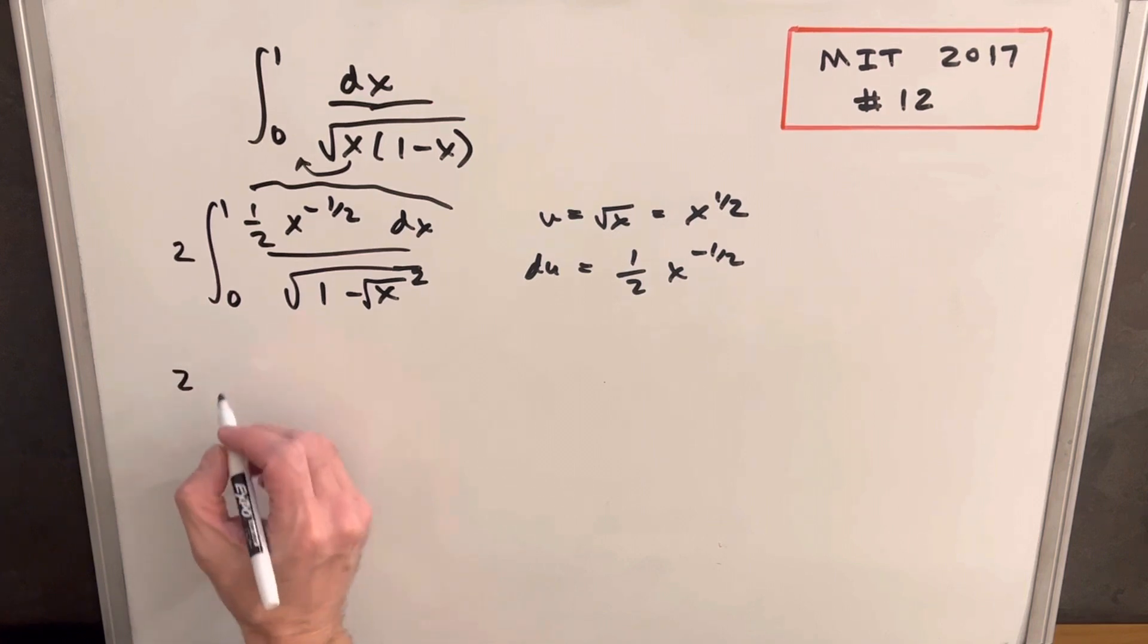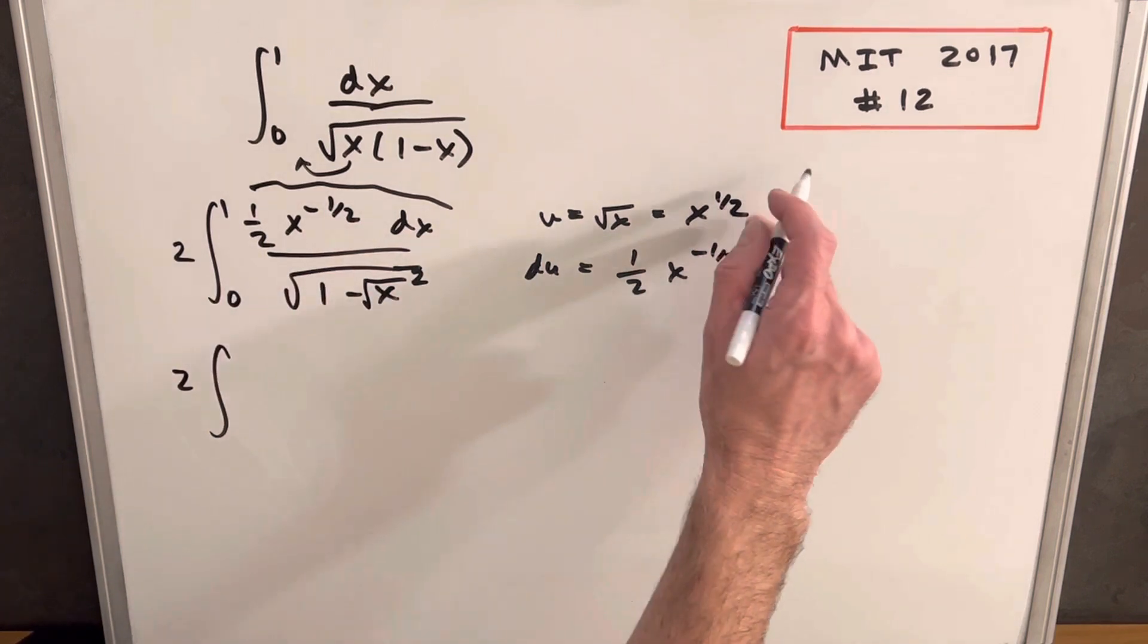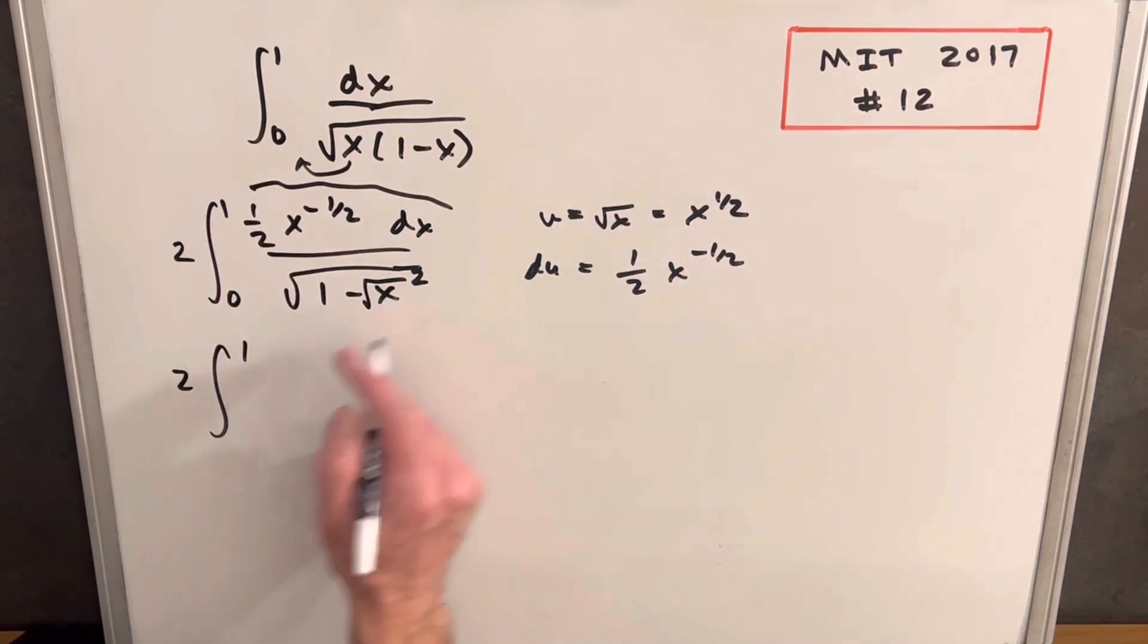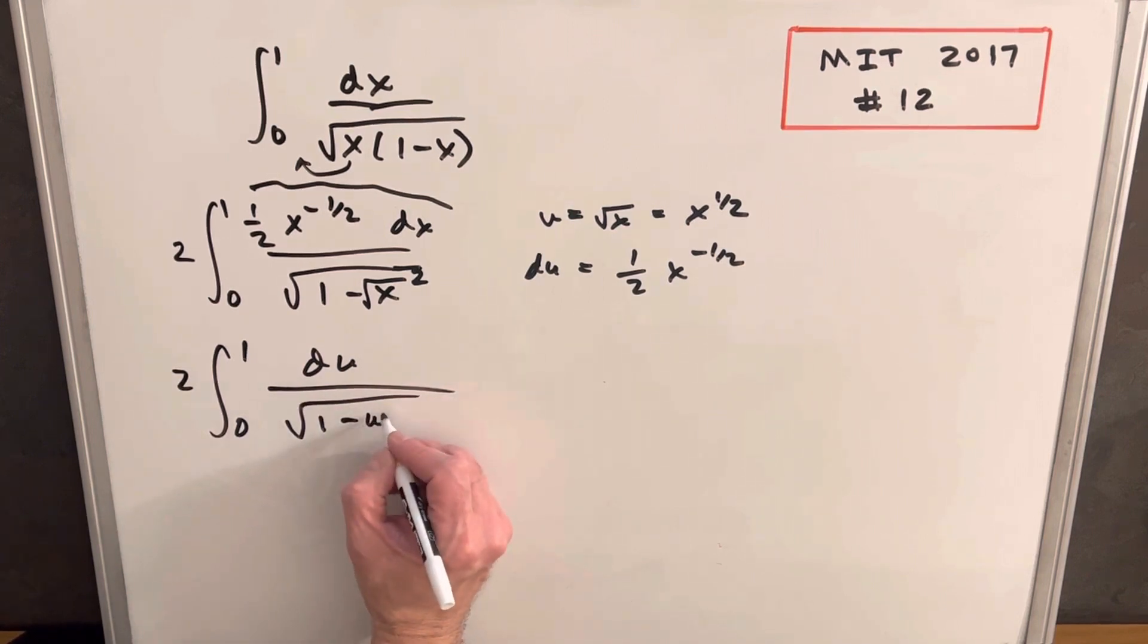Let's make that substitution. We'll have our 2 out front. We want to update our bounds, so plugging in 1, the square root of 1 is 1, and the square root of 0 is 0, so our bounds didn't change. Then, we have du in the numerator, and in the denominator we have 1 minus u squared.